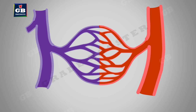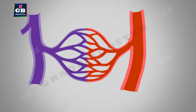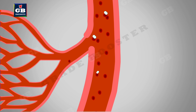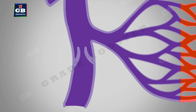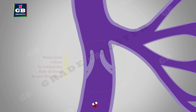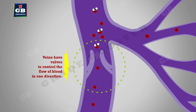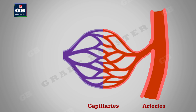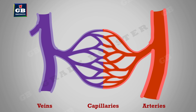The blood vessels in our body are arteries, veins, and capillaries. Arteries have thick and elastic walls to resist pressure exerted by the heart, and carry oxygenated blood from the heart to various parts of the body. Veins collect deoxygenated blood from various parts of the body and bring it back to the heart; they do not need thick walls because blood is not under pressure, but they have valves to control flow in one direction. The arteries branch into thin vessels called capillaries to reach the cells, and these capillaries rejoin at the other end to form veins.